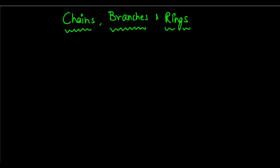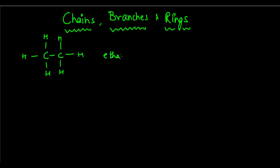Let's have a look at some of the chains. There can be a carbon compound like ethane, for example — this is ethane with one, two, three, four bonds. You can also have methane, but that's not really a chain; it's just a single carbon atom.